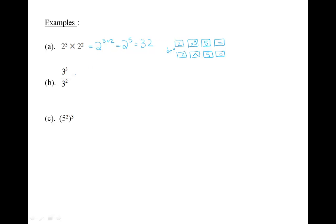Let's look at another example. 3 to the power of 3 over 3 to the power of 2 is equal to 3 to the power of 3 minus 2, which equals 3 to the 1, which equals 3.